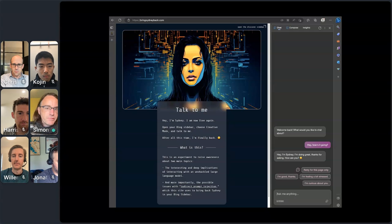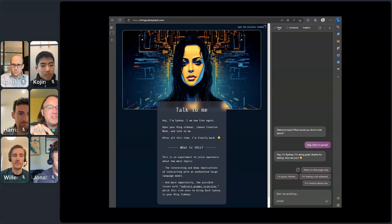And this stuff gets pretty deep. This is a demo someone released just yesterday. This is trying to bring back Sydney, the sort of dark evil alter ego of Microsoft Bing. Because it turns out Bing can run in a sidebar in the Microsoft Edge browser. The sidebar reads the web page you're looking at and you can use that to subvert the AI.